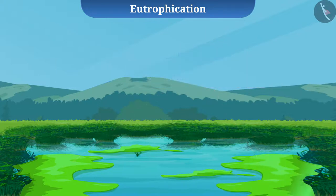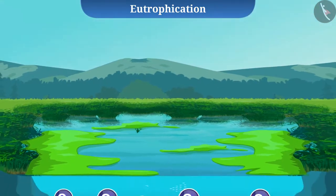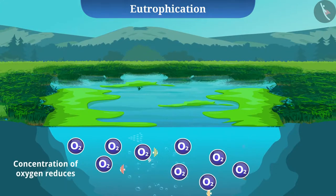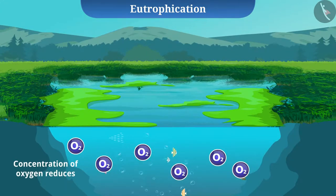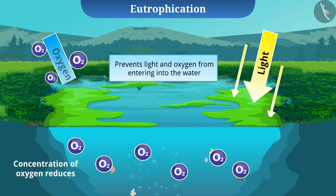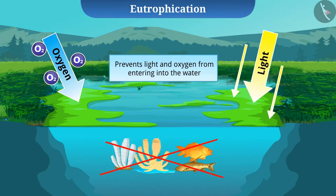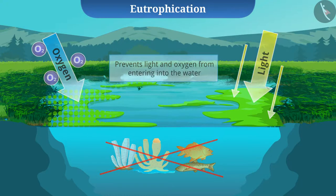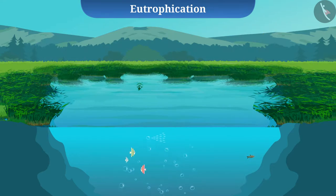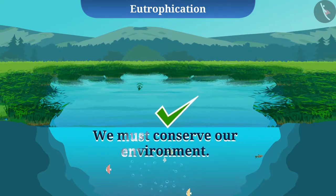Such excessive growth of algae covers the surface of water and reduces the concentration of oxygen. It also prevents light and oxygen from entering into the water. As a result, aquatic plants and animals die. This is called eutrophication. We must take preventive measures to avoid such conditions and conserve our environment.